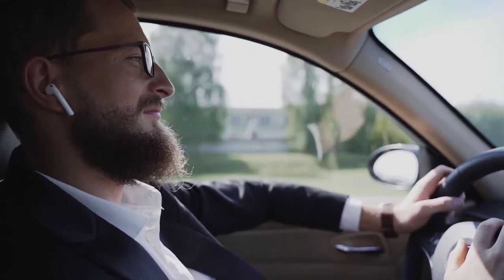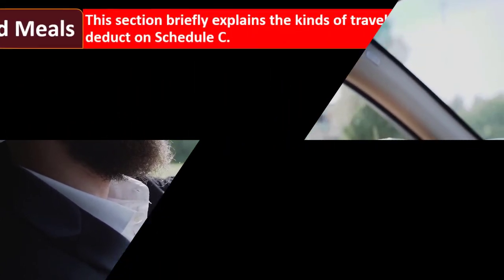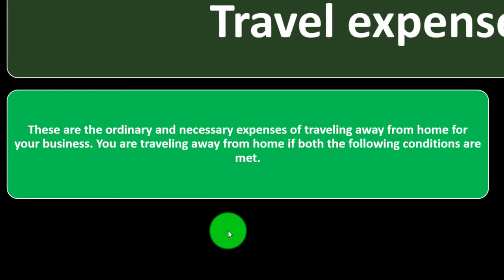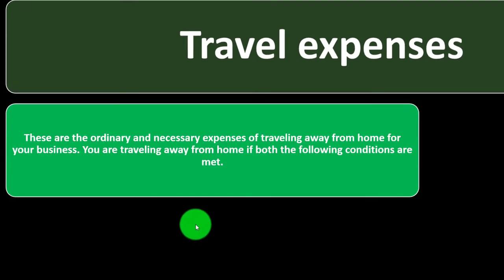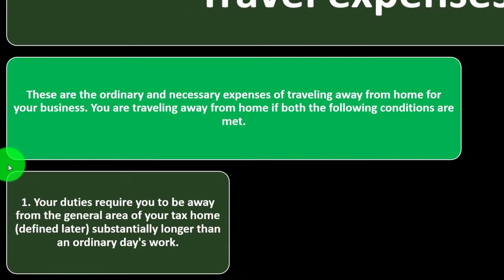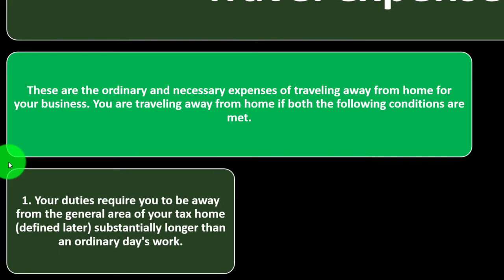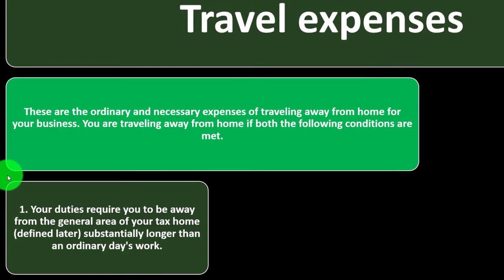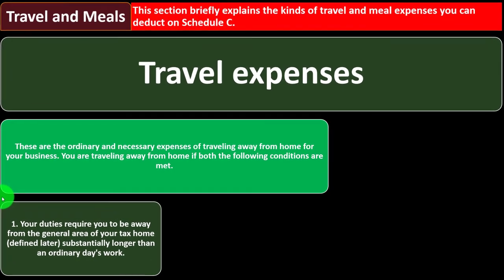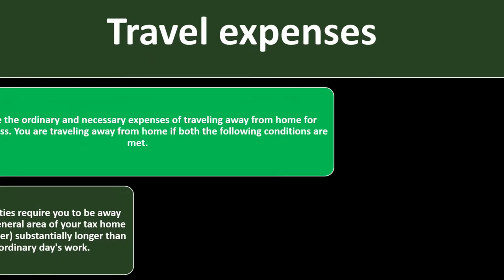This section briefly explains the kinds of travel and meal expenses you can deduct on Schedule C. Travel expenses are ordinary and necessary expenses of traveling away from home for your business. You are traveling away from home if two conditions are met. Condition one: your duties require you to be away from the general area of your tax home — substantially longer than an ordinary day's work.